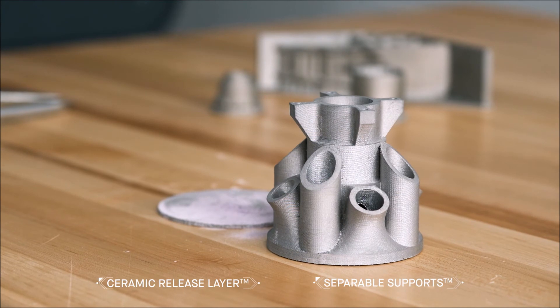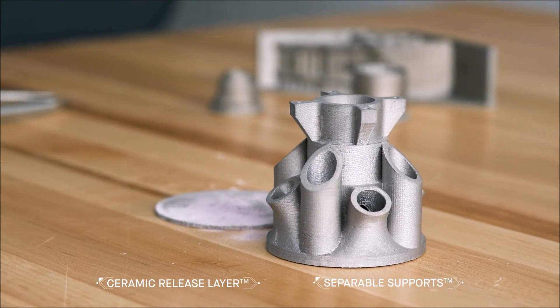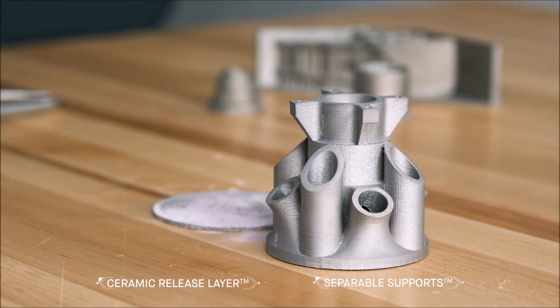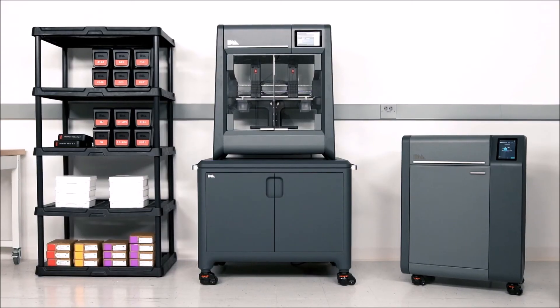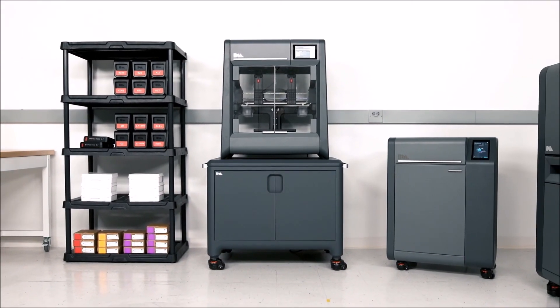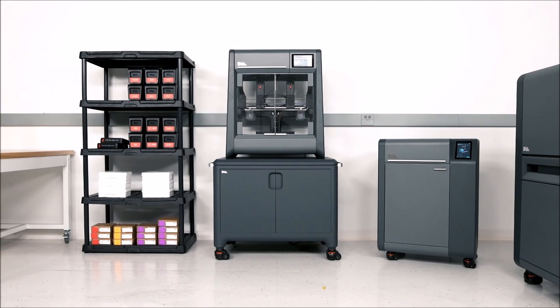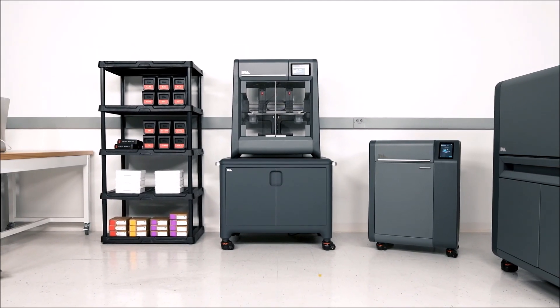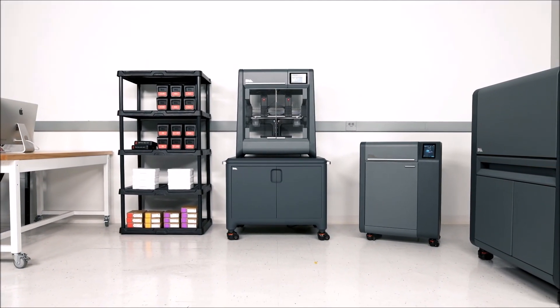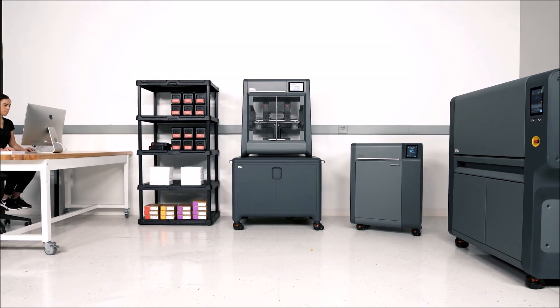The result is a near-net-shaped part with the strength, accuracy, and resolution needed for functional prototyping. The Studio System brings metal 3D printing to the engineer, providing the only safe, cost-effective, and easy-to-use solution for printing complex metal parts in-house.